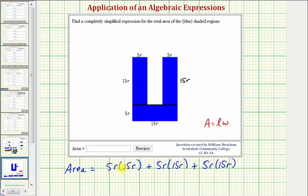Now we'd find each product and then find the sum. So 5R times 15R would be equal to 75R squared, because 5 times 15 is 75, and R times R is equal to R squared. The remaining two products are the same, 75R squared plus 75R squared. And now we have three like terms, so we can find this sum.